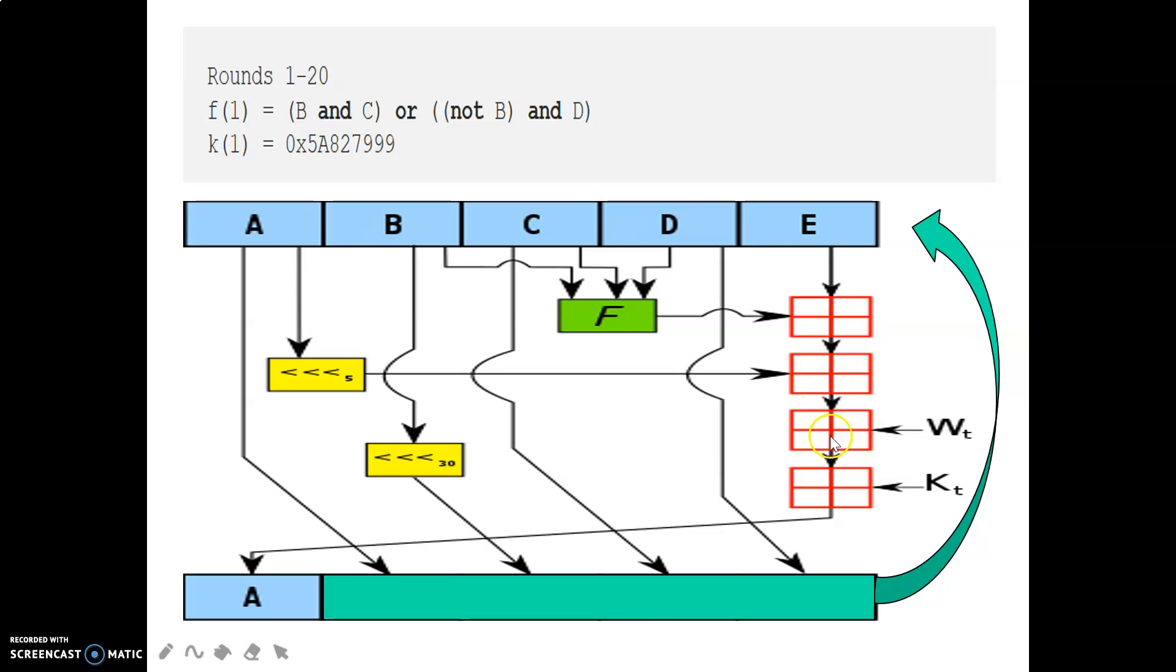In the next step, we are going to add with value Wt. So if you remember from the previous lecture, we have 80 words from W0 to W79. For rounds 1 to round 20, we are going to use W0 to W19. So first of all, our value will be W0. So W0 will be added to the output of the previous step. And the result will be added to the K value, which is the constant value. This is the same value from round 1 to round 20.